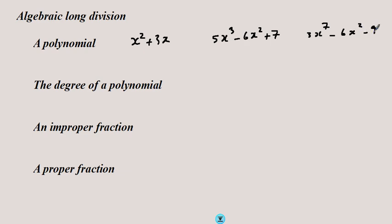3x to the 7 minus 6x squared minus 9 is also a polynomial. The degree of the polynomial is defined by the highest power of x. So for this polynomial the highest power is 2, so the degree is 2 — a second degree polynomial is a quadratic. This is a cubic, a polynomial of the third degree, and this is a polynomial of the seventh degree because the highest power of x is 7.